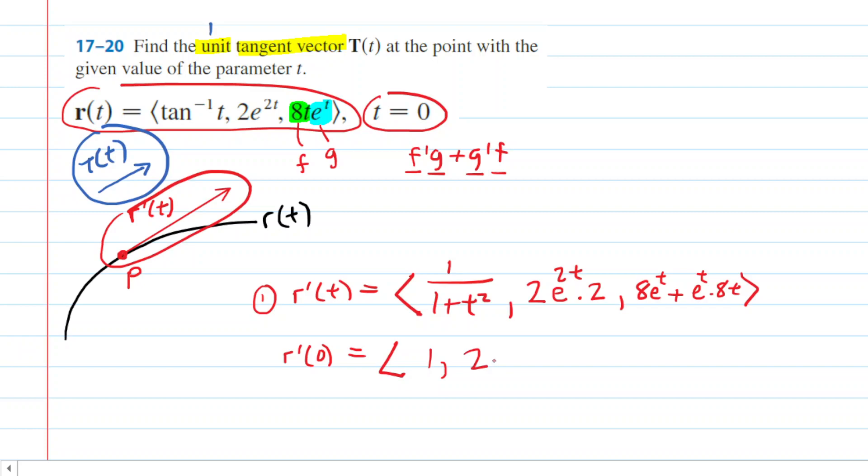And then for the y component, we have 2e to the power of 0 times 2. e to the 0 is 1, so 2 times 1 times 2 is just 4. So this is the y component of the tangent vector.